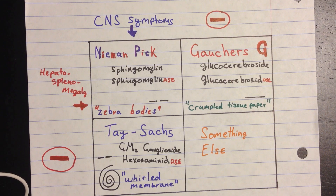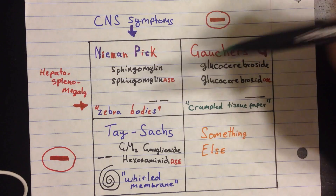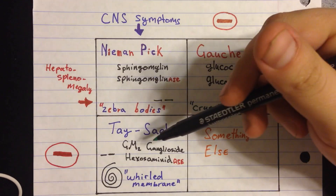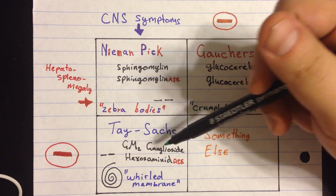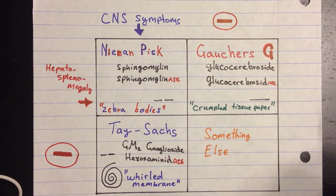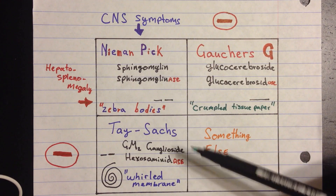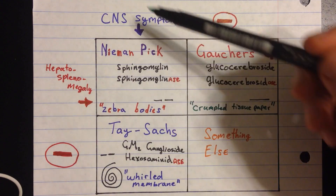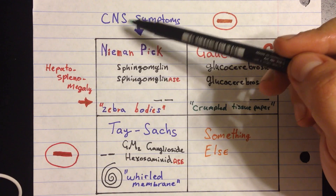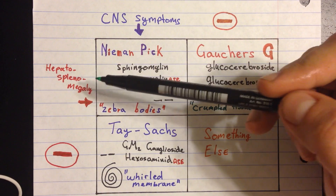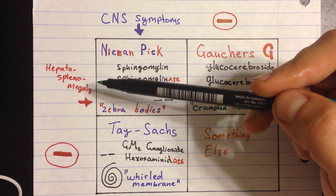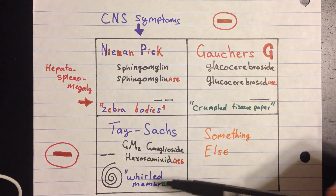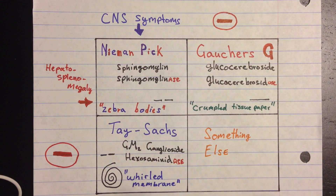What I want you to think about with this disease is that the next step is GM3 — that's what we're trying to make out of the substrate, but we can't do it because we're missing this enzyme. This person is going to have CNS symptoms but no hepatosplenomegaly.